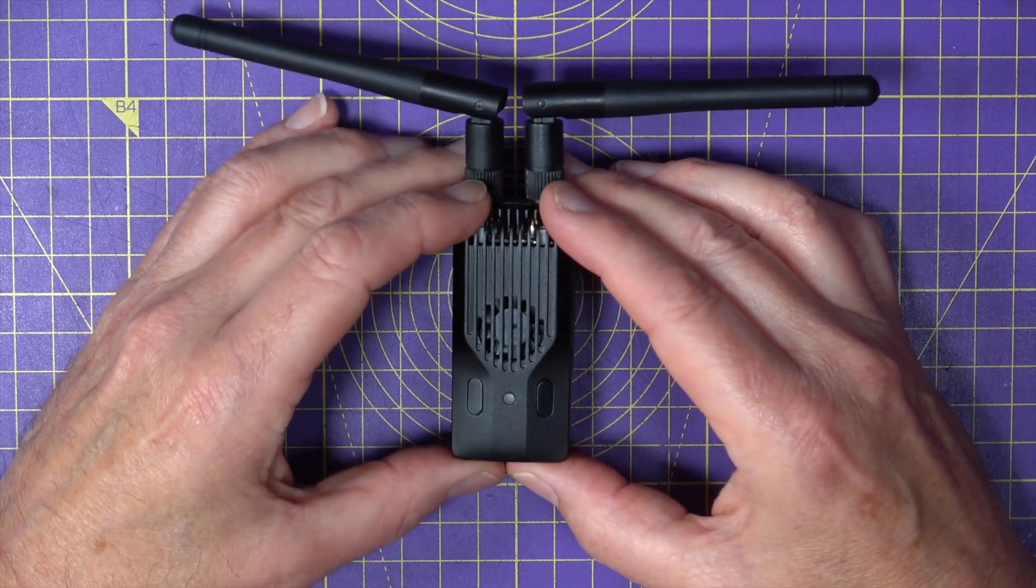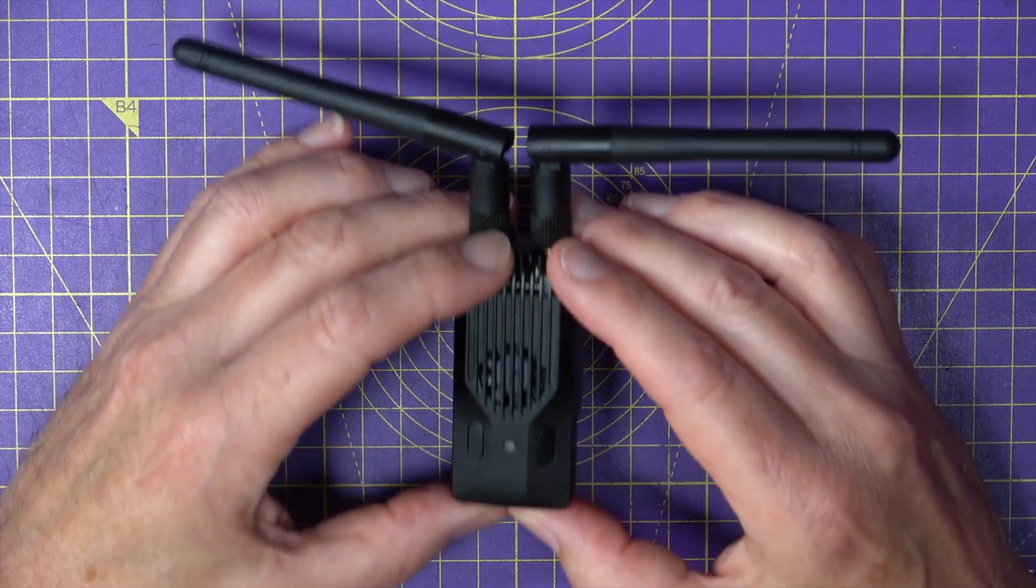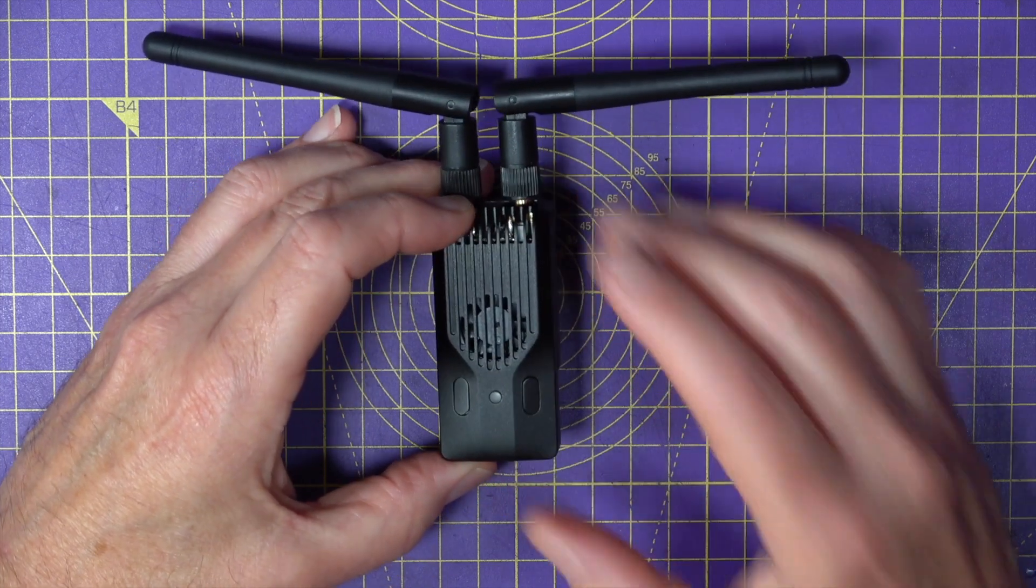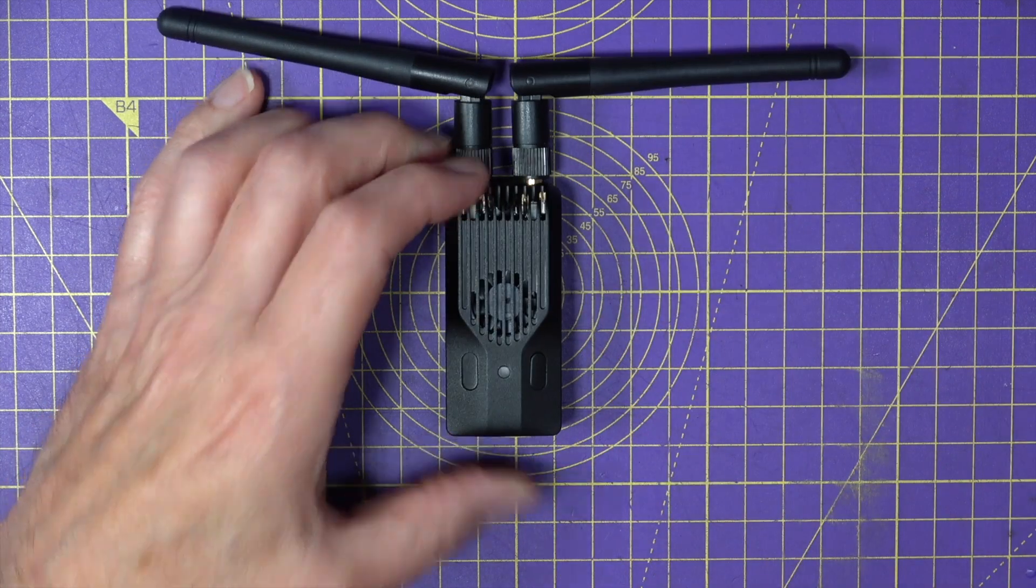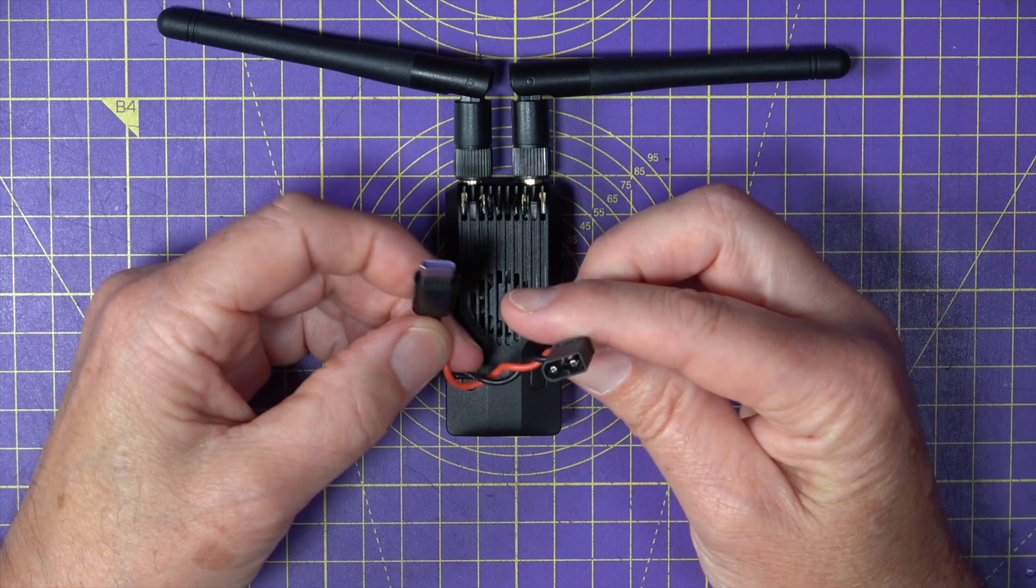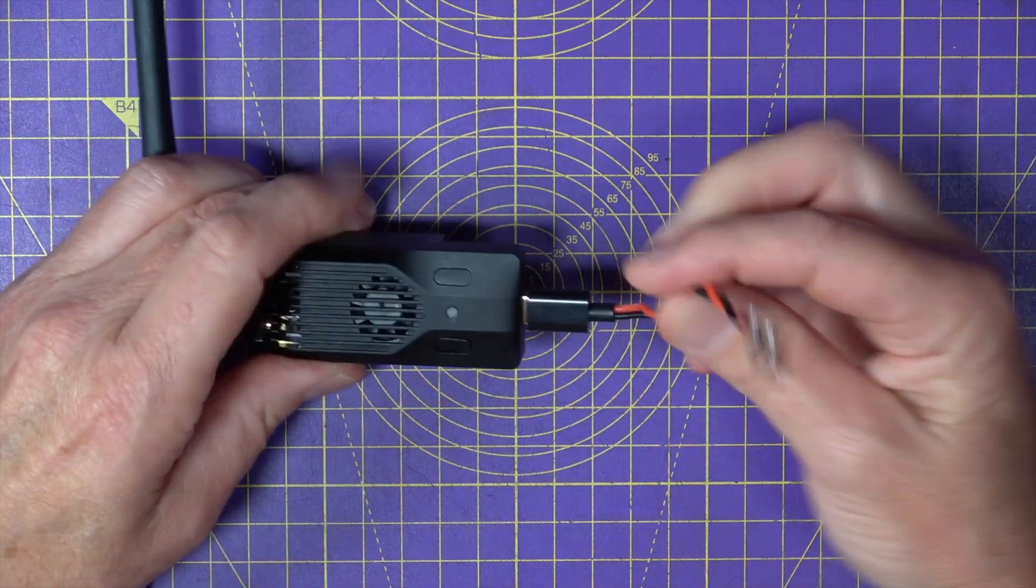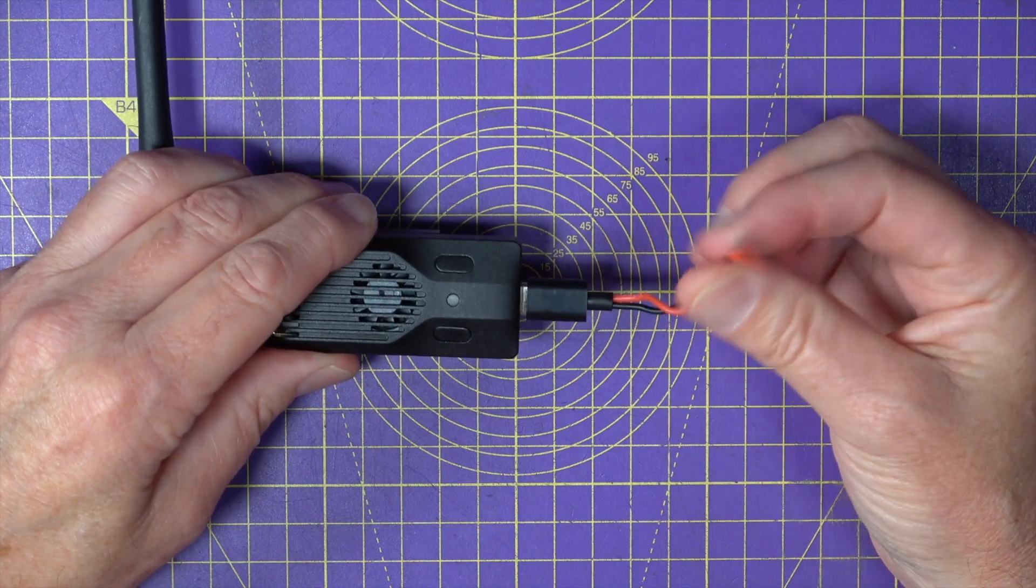And if you're running this at the full 1 Watt, it will eat up your transmitter battery fairly quickly. BetaFPV include this XT30 to USB lead so that you can power this from an external 2 to 3S LiPo.